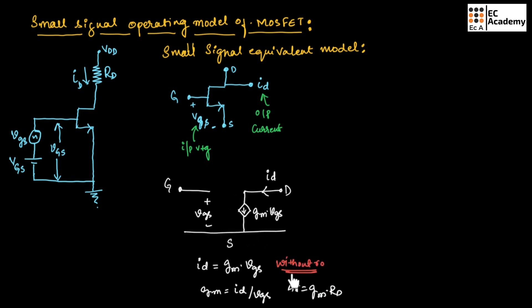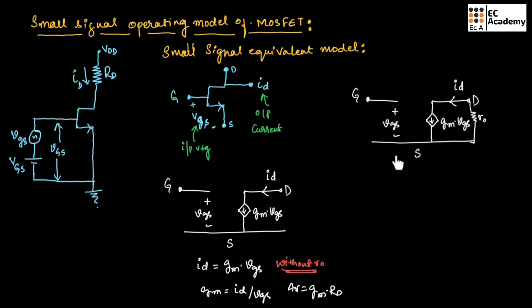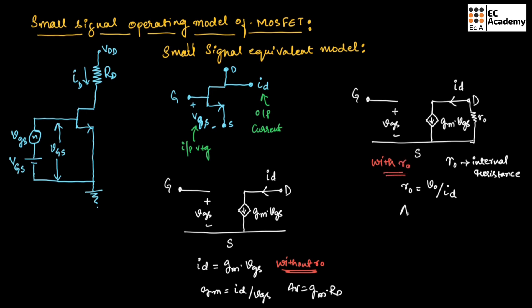This is the small signal model without internal resistance R0. We can also write the same small signal model with internal resistance R0, where R0 = V0/ID. For the circuit with R0, the voltage gain is AV = GM · (RD ∥ R0). Without internal resistance, gain is GM · RD; with internal resistance, gain is GM · (RD ∥ R0).